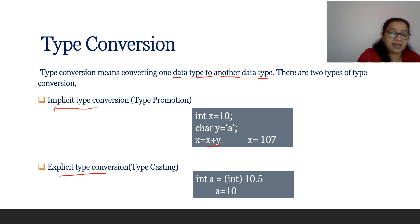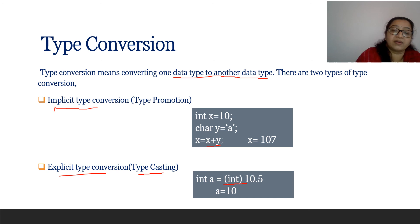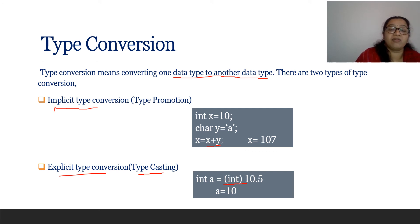Explicit type conversion is where the programmer specifies the data type for conversion — this is called type casting. For example: int A equals (int) 10.5. We put the target data type in brackets just before the value. 10.5 is a float; by casting to int, the 0.5 fractional part is dropped and only 10 is assigned to A. So the value of A becomes 10.